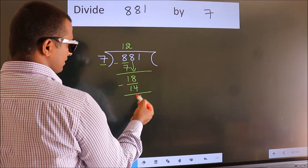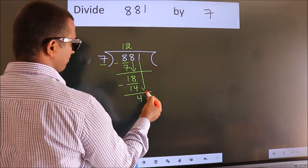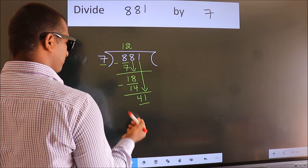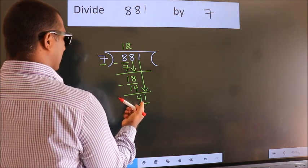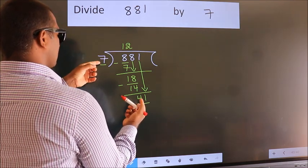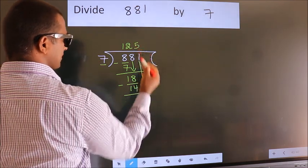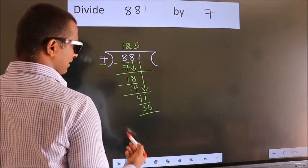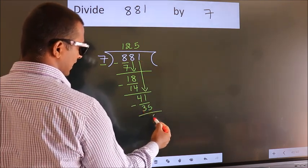After this, bring down the beside number. So, 1 down. So, 41. A number close to 41 in 7 table is 7 5s 35. Now, we subtract. We get 6.